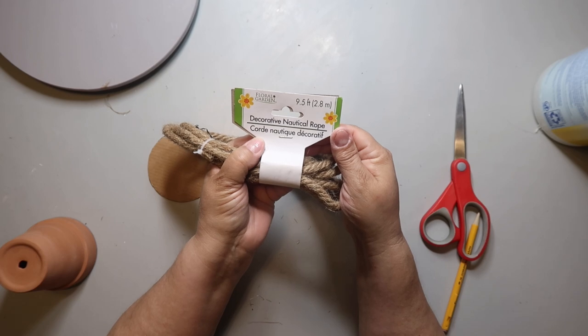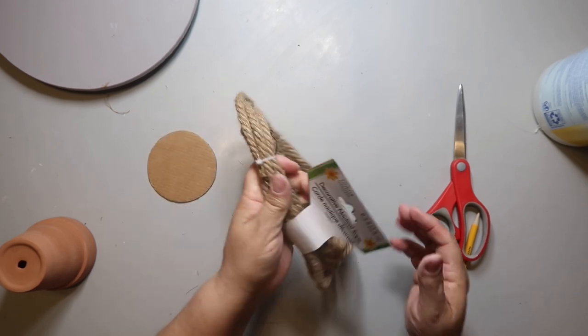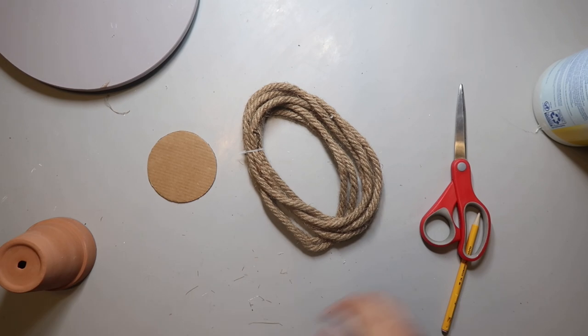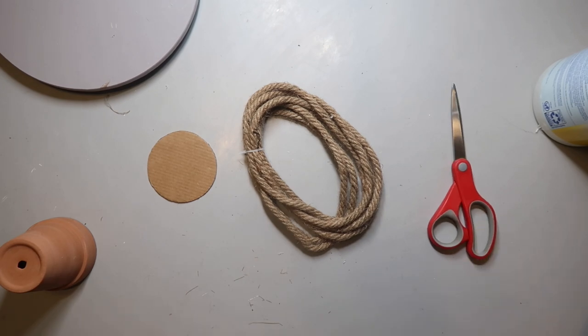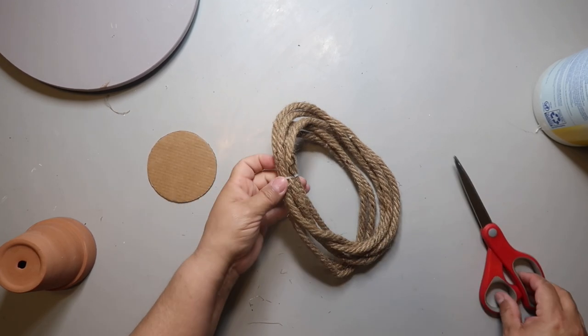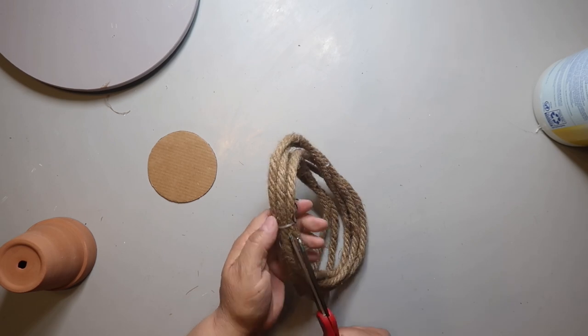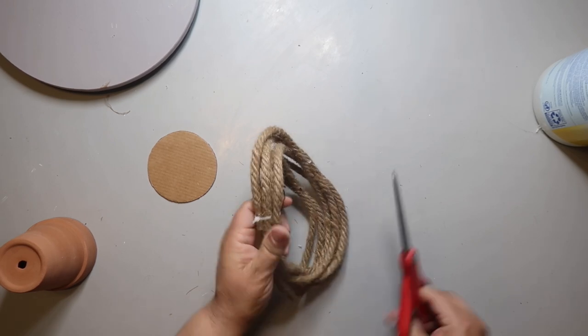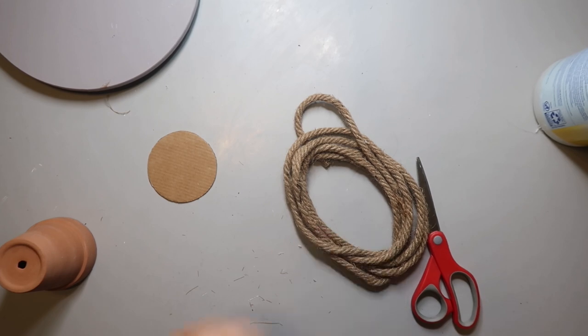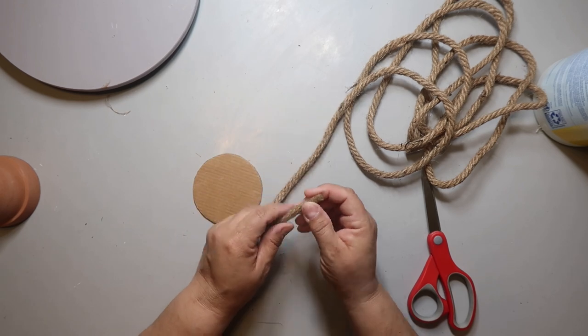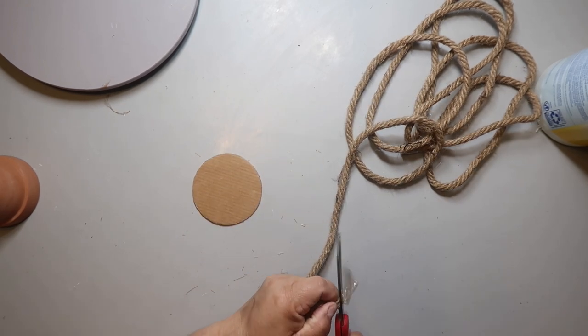Grab some nautical rope from Dollar Tree - I'm using the decorative nautical rope. If you didn't know, Dollar Tree carries a couple of different kinds: one is called nautical rope jute and the other is decorative nautical rope. One is slightly thicker than the other, and depending on what you're making, the size difference could be noticeable.